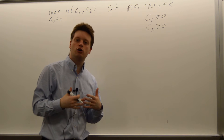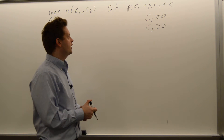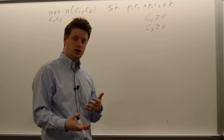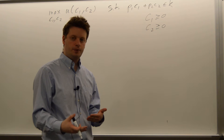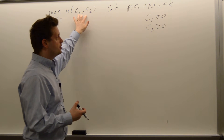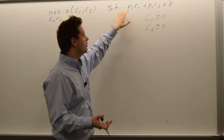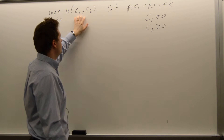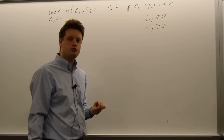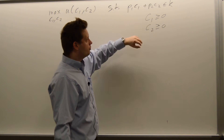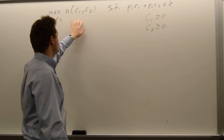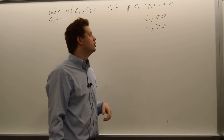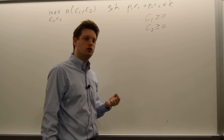We now want to check the constraint qualification. The constraint qualification checks if the gradient of the binding constraints has the required rank, which is the minimum of the number of variables or the number of constraints. For example, we have three constraints and two variables. If all three constraints are binding, the gradient needs to have at least rank 2. If only one binding constraint exists, the minimum of the two is one, so the constraint qualification needs rank 1 for our optimal condition to lead to the correct maximum.